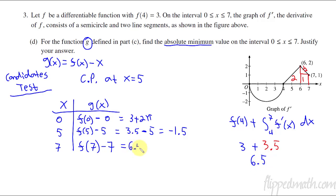So I have 6.5 minus, so that's f(7) is 6.5, minus 7 equals negative 0.5. So then it goes back. What was the absolute minimum based on the candidates test? I have an absolute minimum, absolute min of negative 1.5 at x equals 5 based on the candidates test.